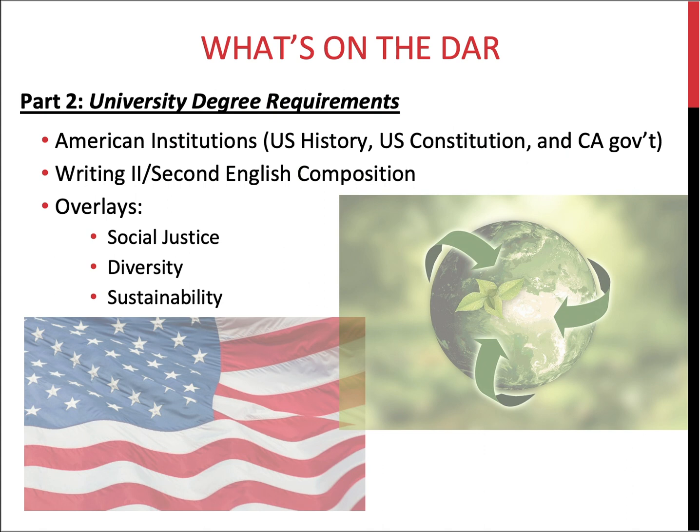The second area is Writing II, or Second Language Composition, which requires you to take a second composition course — the first being the A2 GE requirement. The third area consists of the overlays: social justice, diversity, and sustainability. These can be combined with other GE or major courses, or can be taken separately.